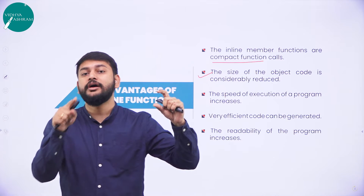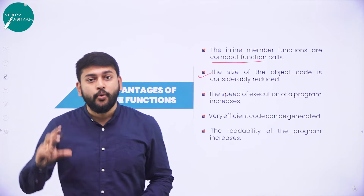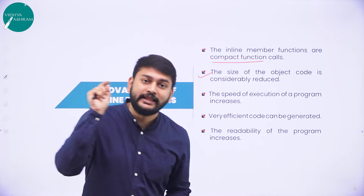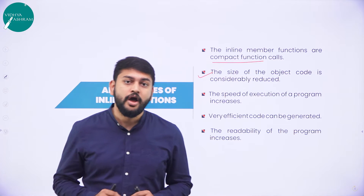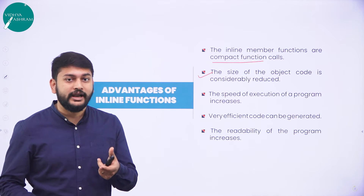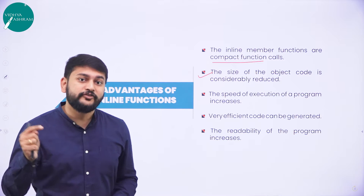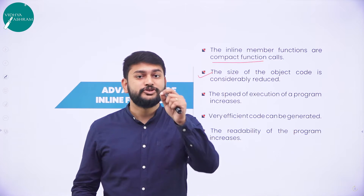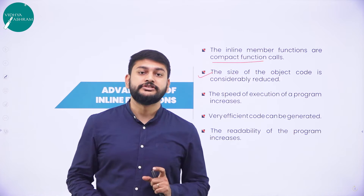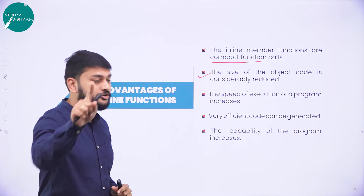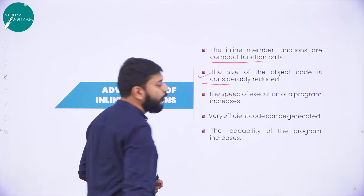The linking will happen with the header file. Once the linking happens, a type of file is generated — that is the object code. Your C++ file gets converted into an object code file. The size of that object code file is very much smaller when you are using the inline function.